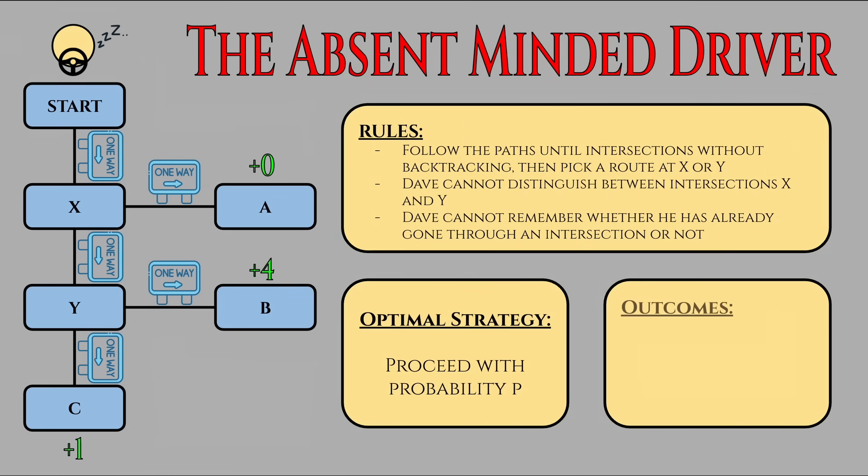For example, he has a P-squared chance of going all the way through, in which case he gets plus one utility. Furthermore, he has a P times one minus P chance of exiting at the second intersection, in which case he gets plus four utility. Lastly, he gets no utility for turning immediately, which zeroes out the expected value he gets for conditioning on that sub-scenario.